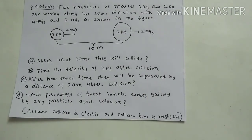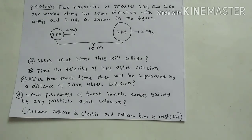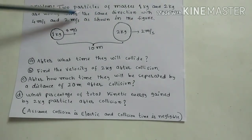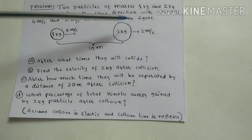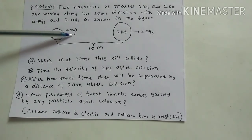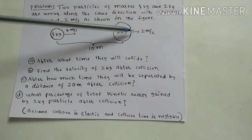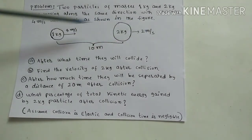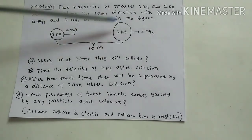I am giving you a problem — you have to solve it. This problem is based on elastic collisions, which I covered in previous videos. Two particles of masses 1 kg and 2 kg are moving along the same direction with velocities 4 m/s and 2 m/s respectively as shown in the figure. Initially they are separated by a distance of 10 meters.